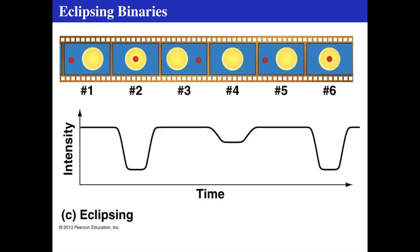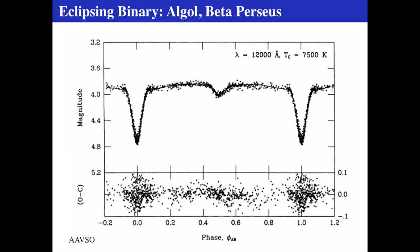Here's a sample light curve from an eclipsing binary: stage one, both stars visible; stage two, small star in front of big star, producing a deep eclipse; stage three, back to seeing both; stage four, small star behind big star, shallower eclipse; stage five, back to the deep eclipse. This is one of the classic examples — Beta Persei, or Algol. We're looking at an infrared wavelength of 12,000 angstroms. Rather than plotting against time, we sum over many events and plot against orbital phase.